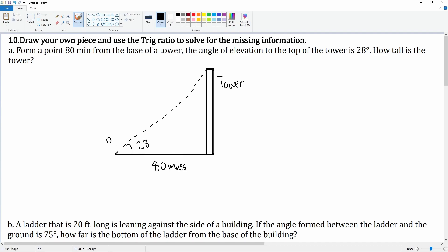If we draw the person here, we notice that the 80 which is adjacent, the height of the tower which is going to be our opposite, and then the 28 degrees is our angle. So this is tan because it's TOA, right, TOA.